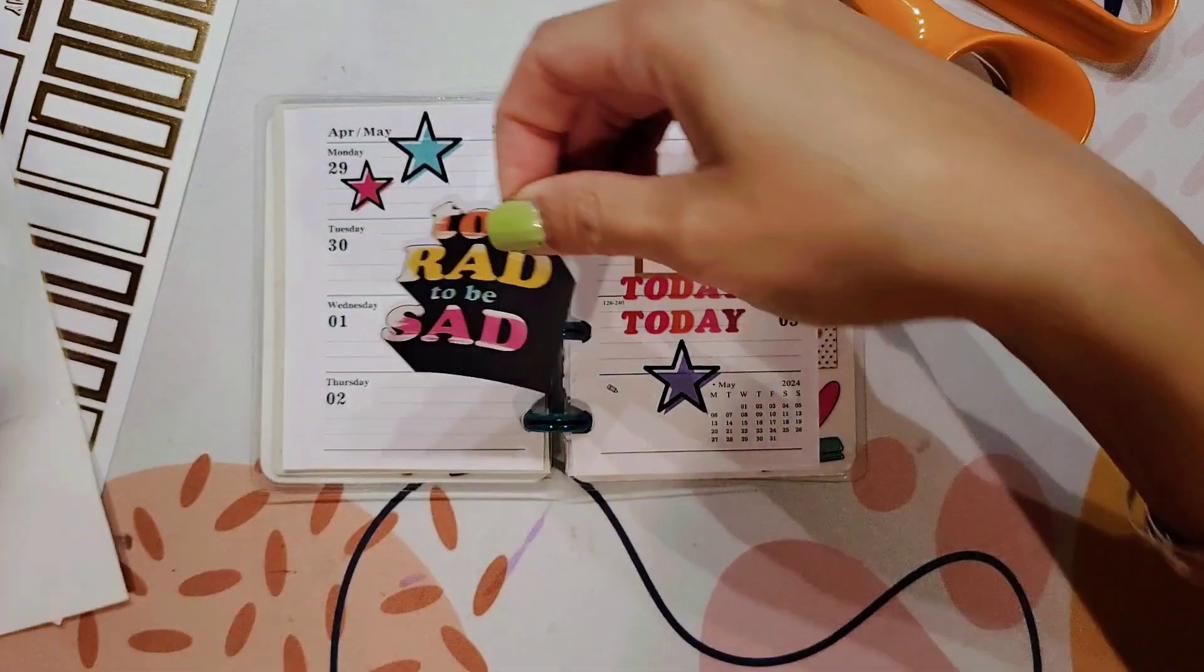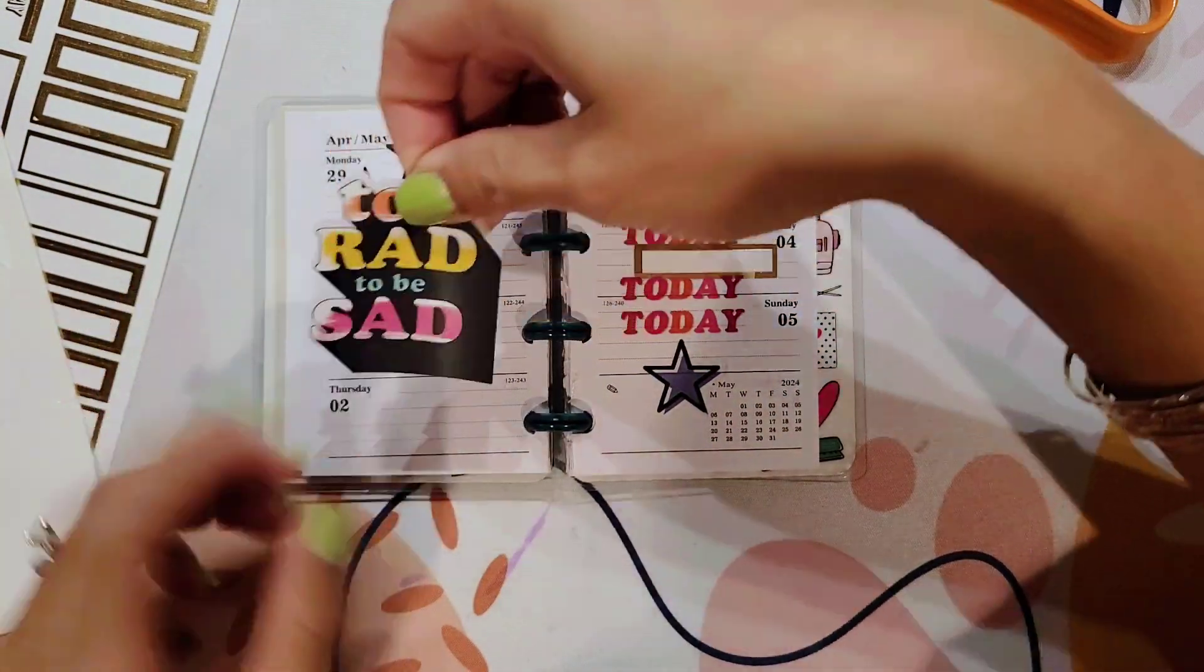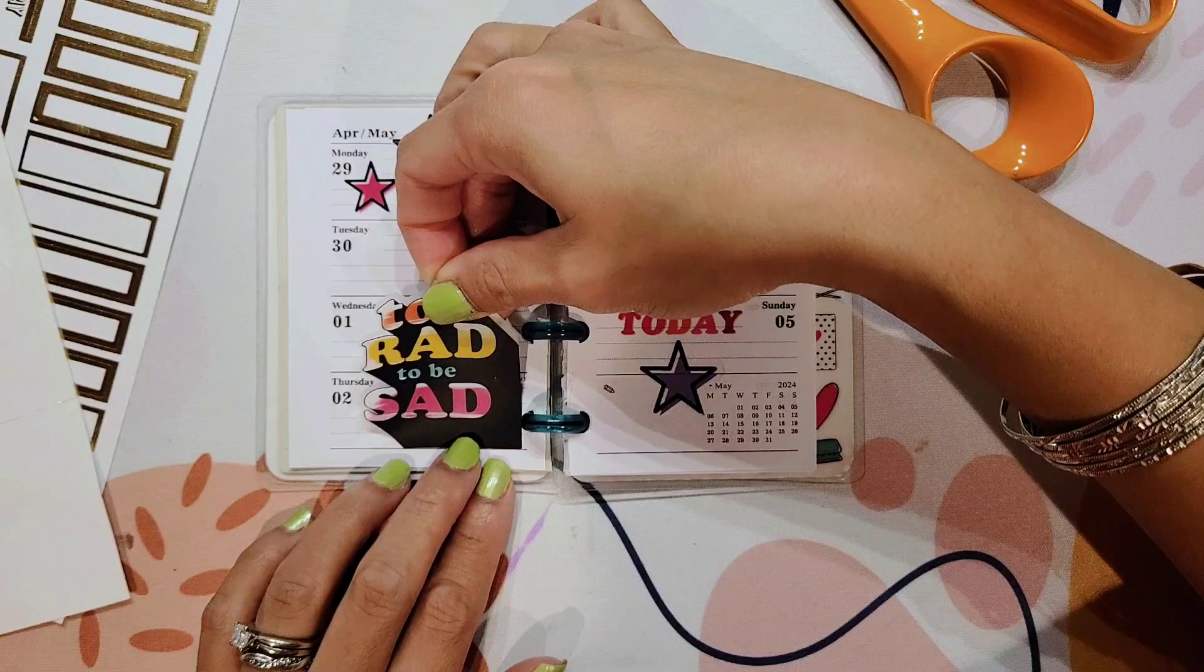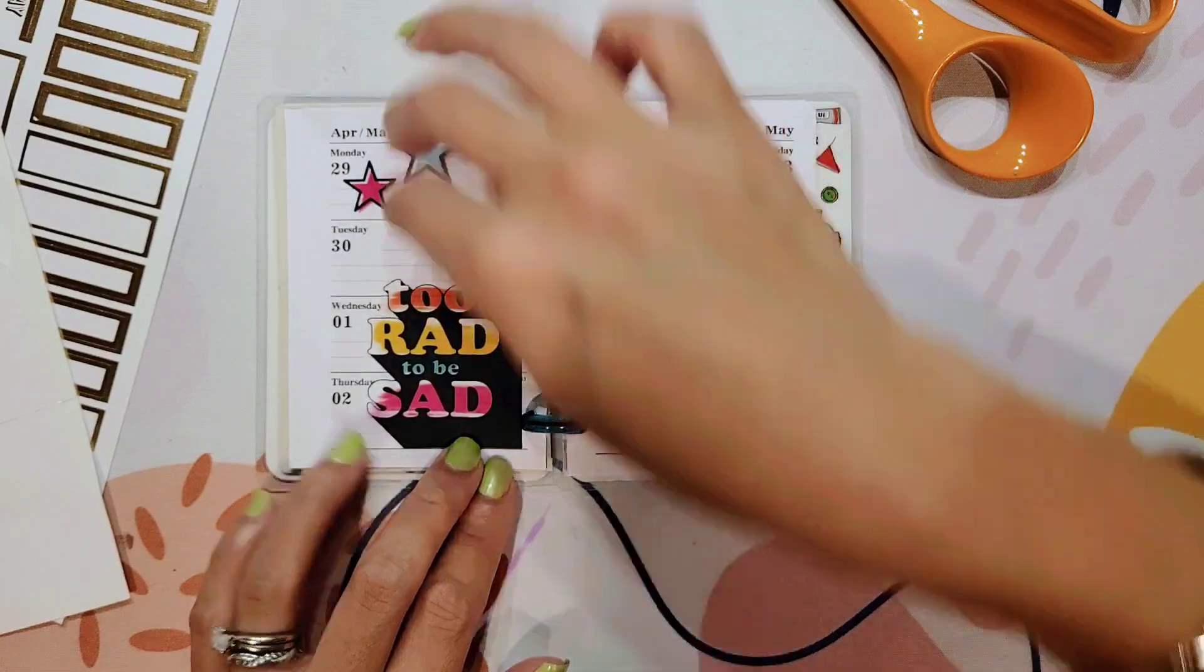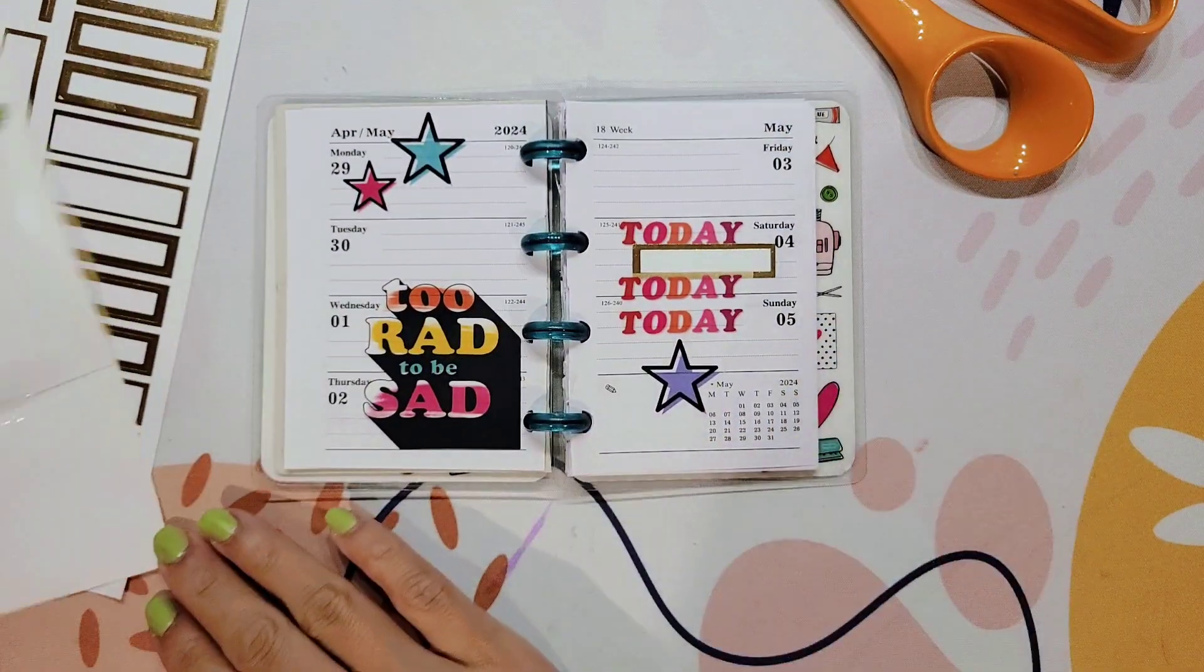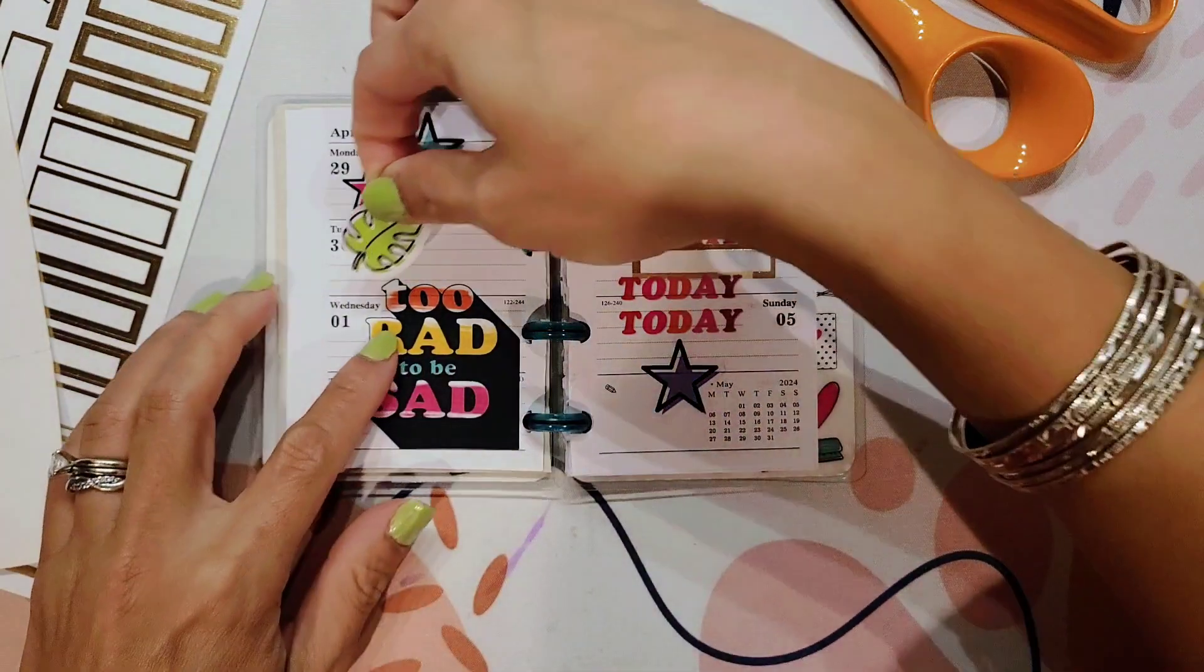All right. There's this really big sticker, Too Rad to Be Sad. I think I'm just... It doesn't really fit, but I want to use the entire sticker sheet. So I'm going to stick it right there. Too Rad to Be Sad. And then a couple of leaves.